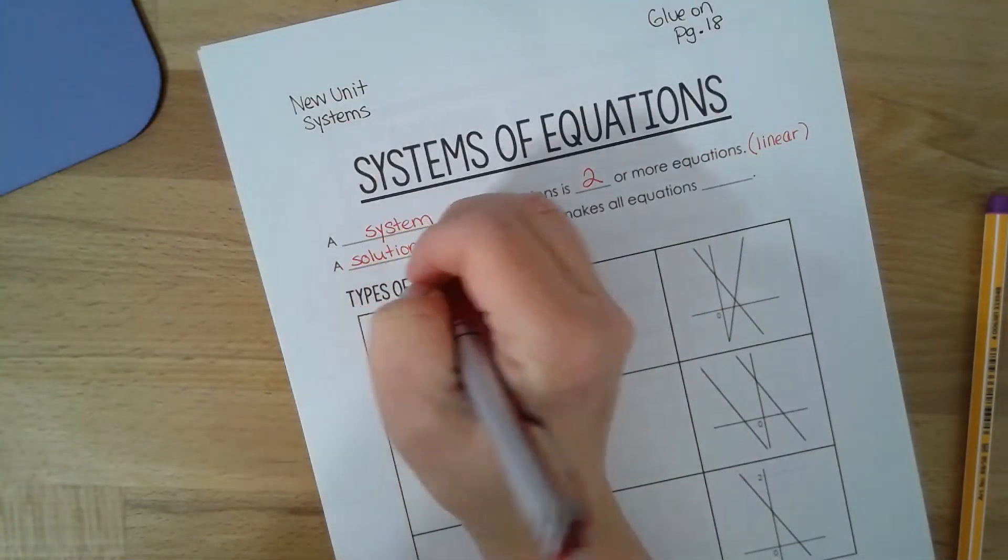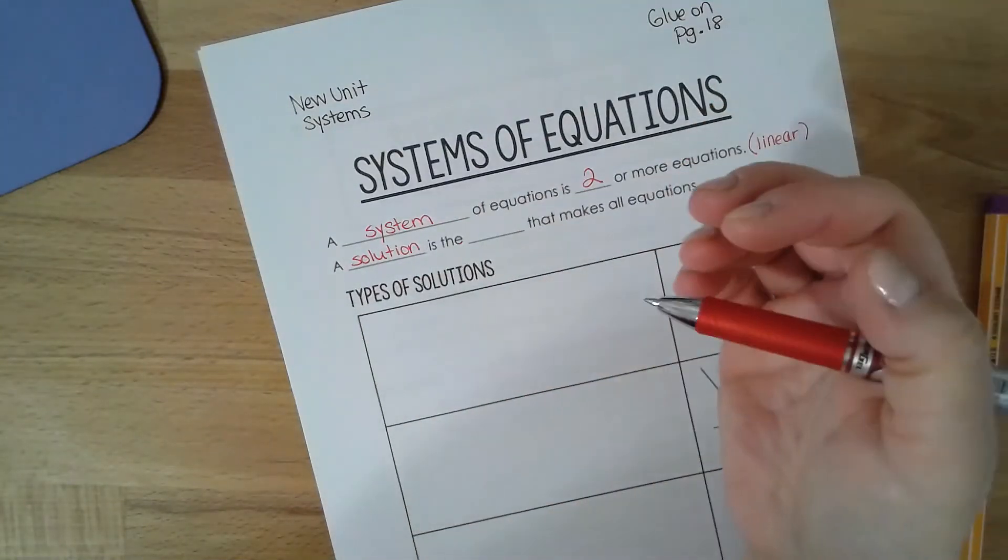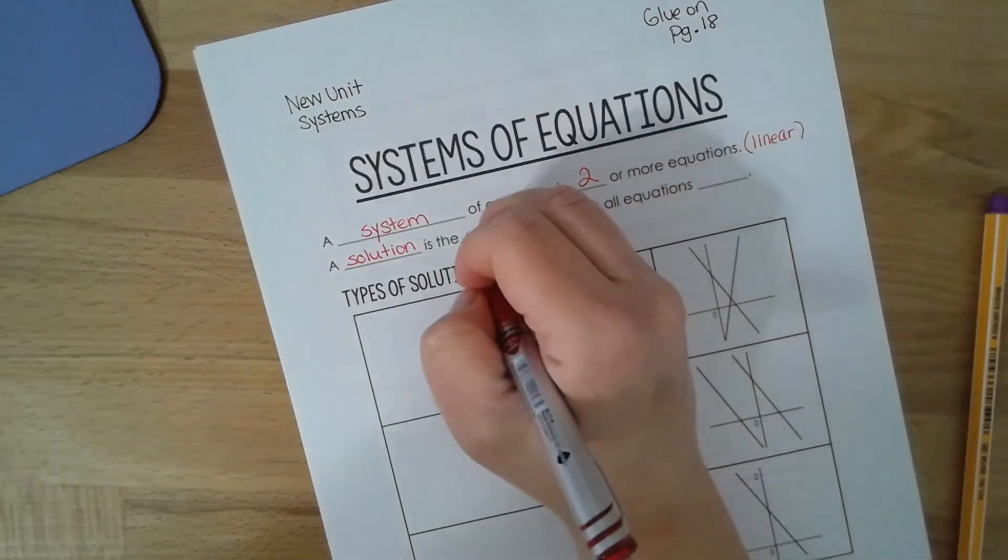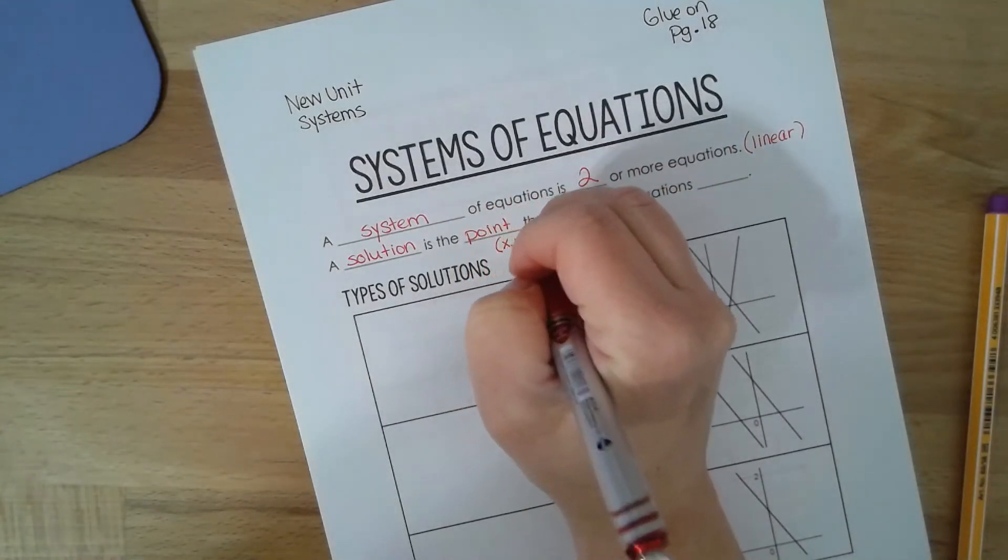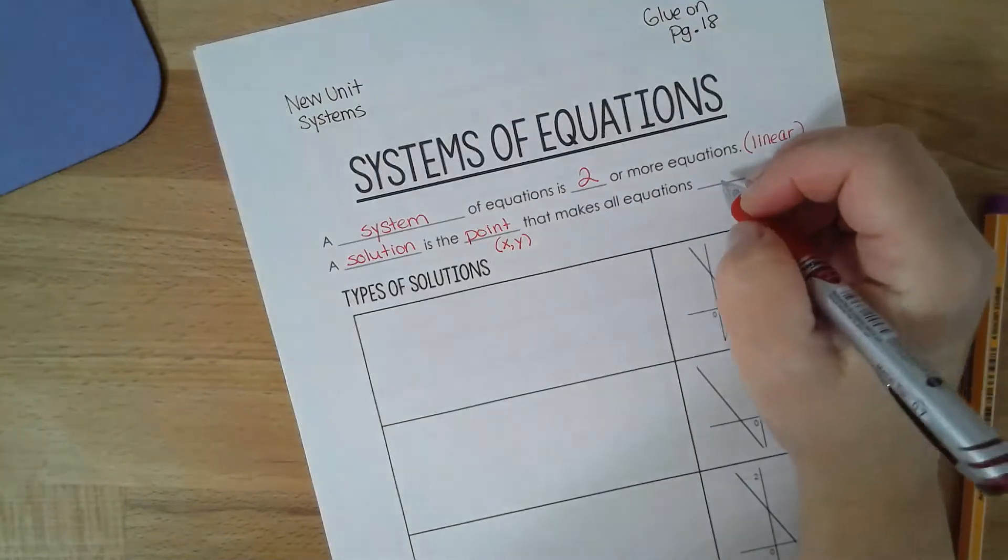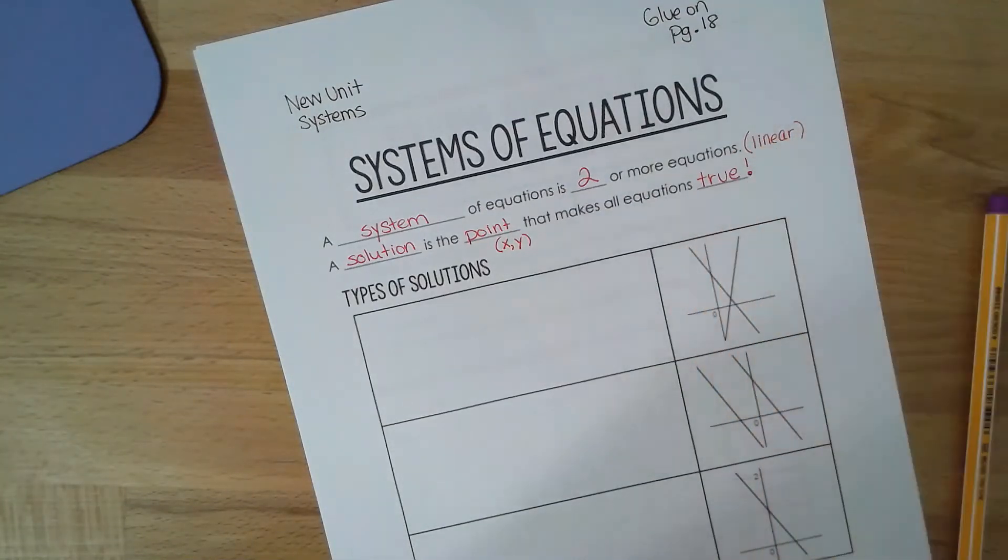We're also going to talk today about what the solution to a system is because I'm going to ask you to solve a system different ways. So a solution is the point, the x comma y, that makes all equations true and I'm going to show what that means in a second.